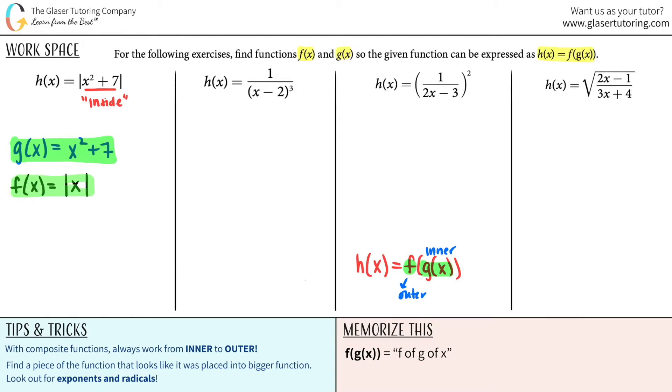That was pretty fun. Let's work on the next one. h of x equals 1 divided by x minus 2 cubed. Is there anything that is trapped inside? It looks like x minus 2 is trapped between these parentheses. So this would be inside. That's the hardest part. That's your inner function.